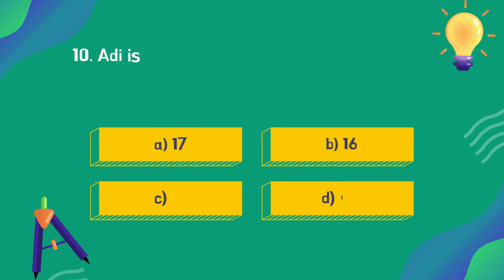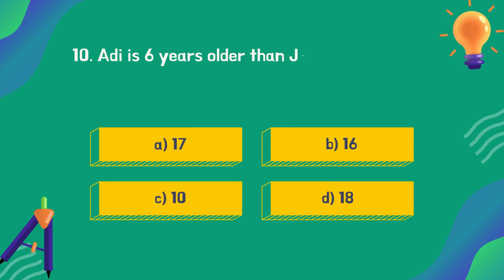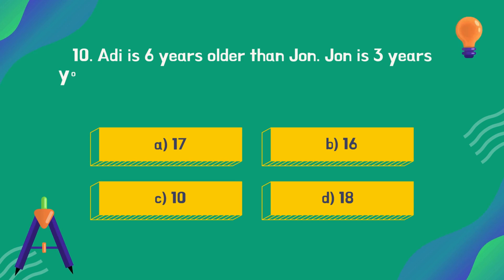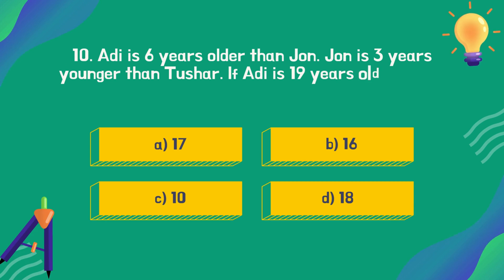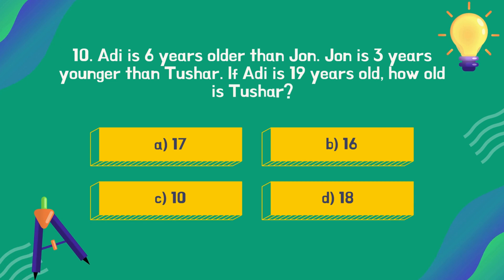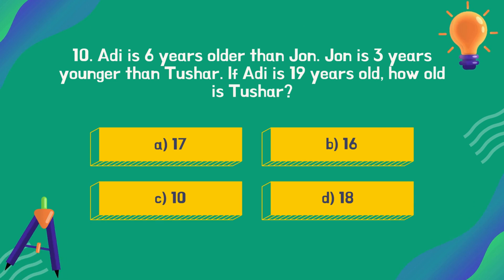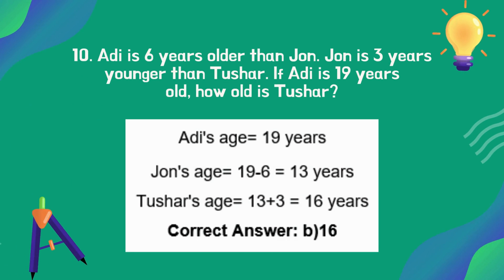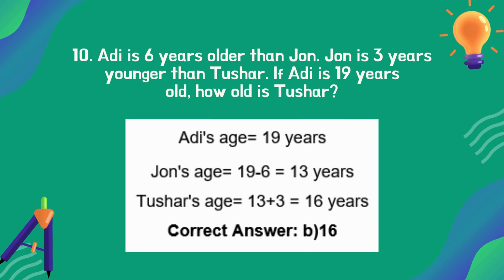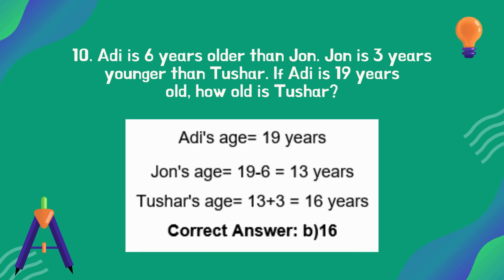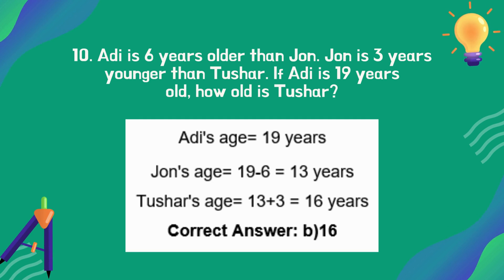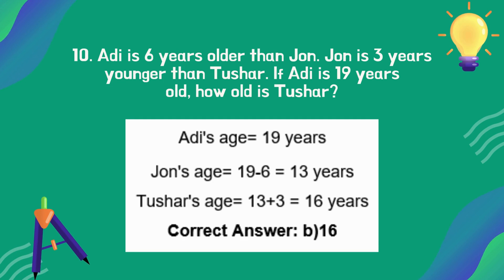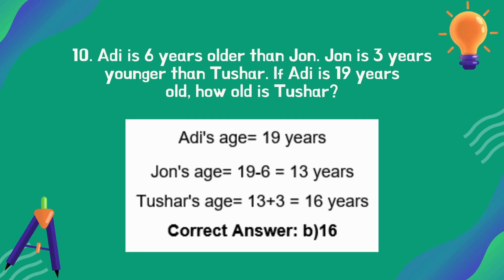Adhi is six years older than John. John is three years younger than Tushar. If Adhi is 19 years old, how old is Tushar? The correct answer is option B: 16.